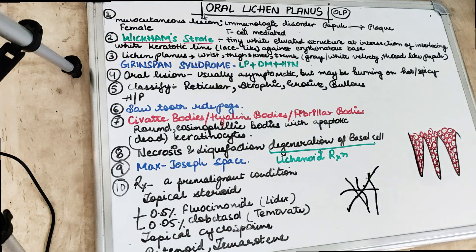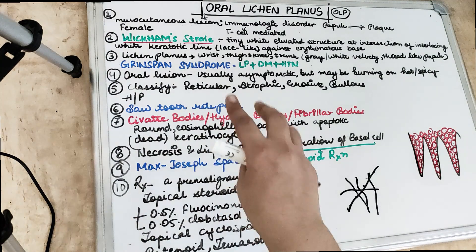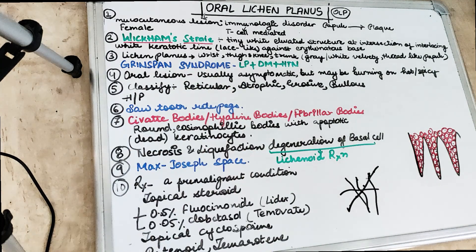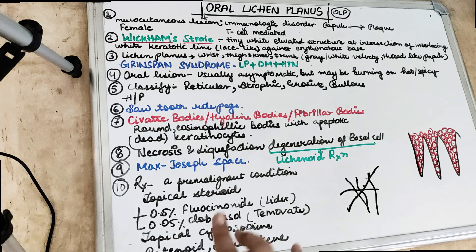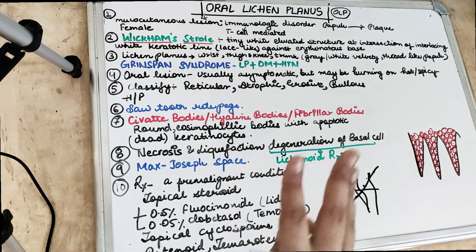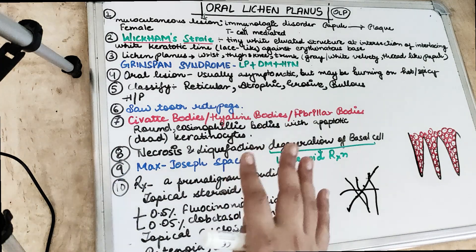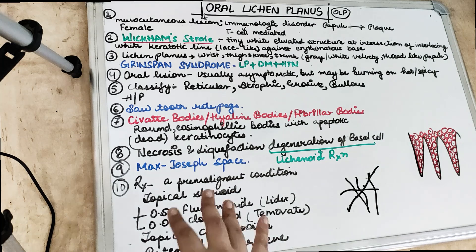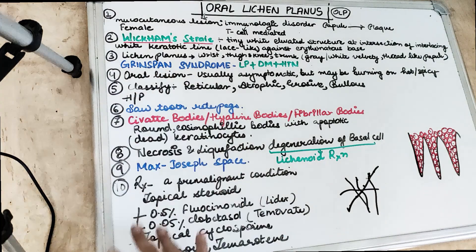We also see Grinspan syndrome, which is a triad of three conditions: lichen planus, diabetes mellitus, and vascular hypertension. If the patient has all three of these, we call it Grinspan syndrome.